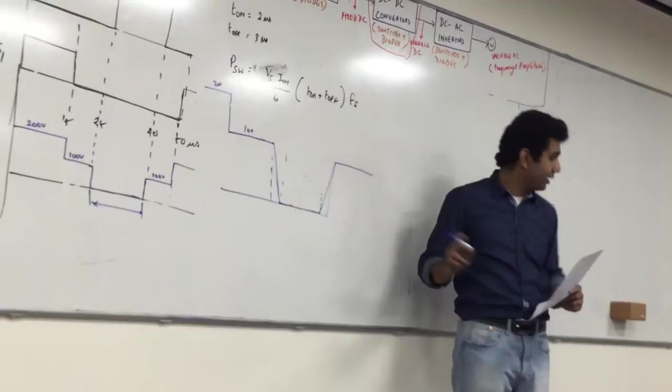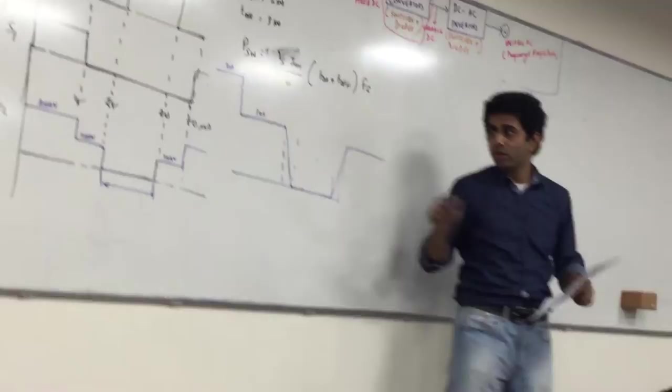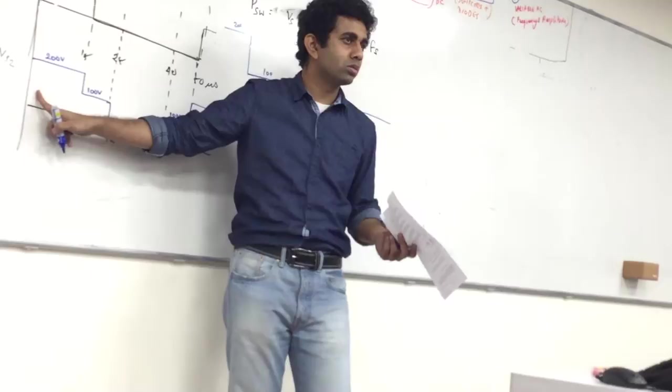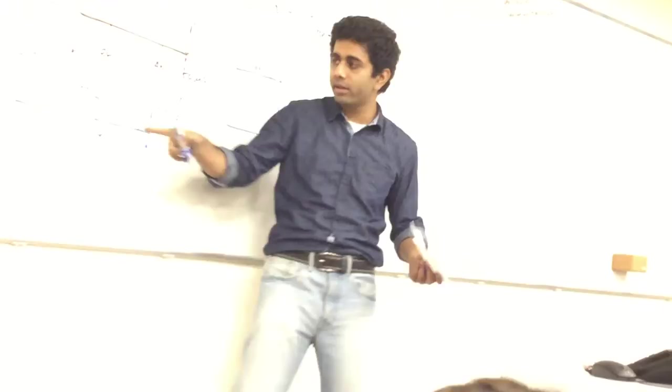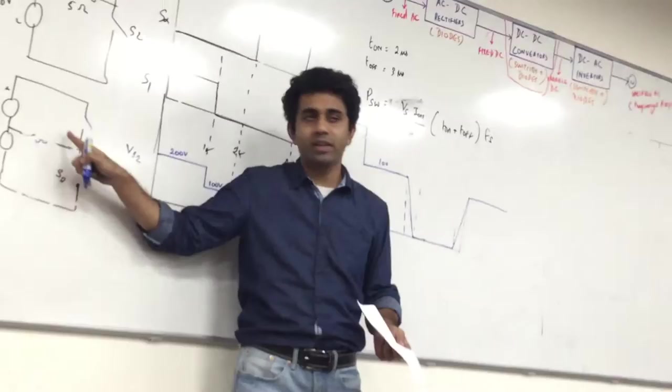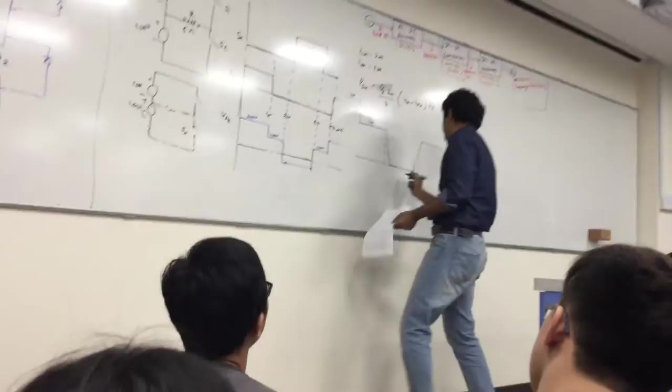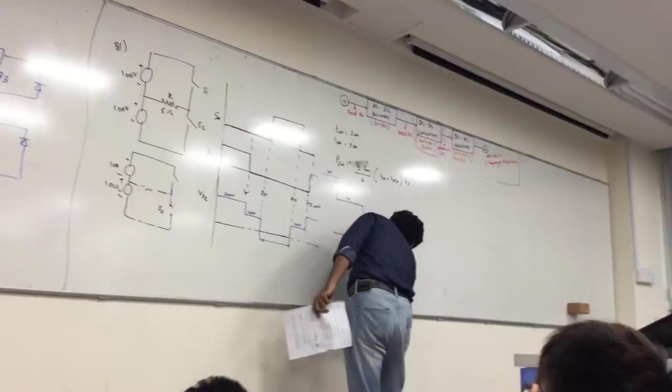Now I need to know what is the current — the current across my switch. We'll have a current across this switch here. Any current across switch two? I'll have some current here. Whatever current is flowing here, it is just 100 divided by whatever my resistance value is — it is 5 ohms. So my current during this time is just 100 divided by 5, which is 20 amperes.